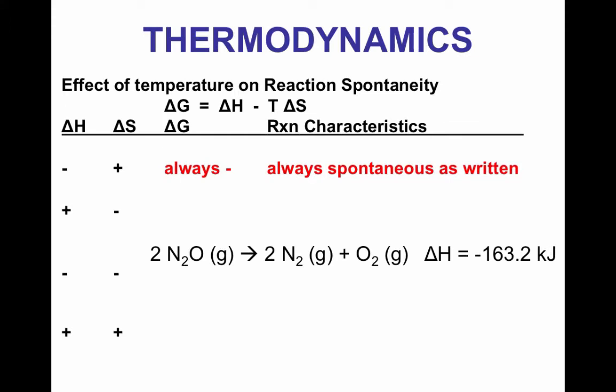What we're going to look at is this table that you have in your notes. It's going to relate delta H and delta S to delta G. We're going to look at different scenarios and what that means about the free energy and the spontaneity of the reaction. As we go through, you're going to want to take into account the equation delta G equals delta H minus T delta S, which we'll use for every scenario we discuss.